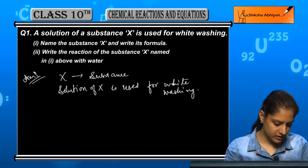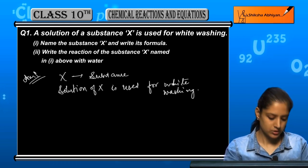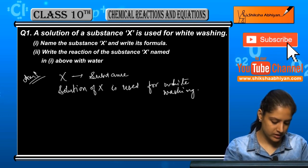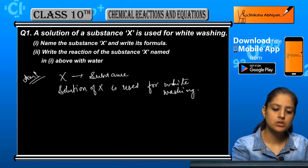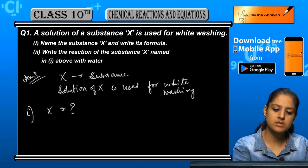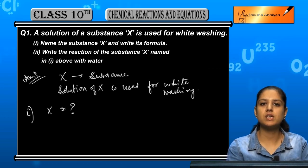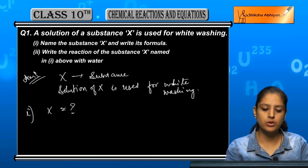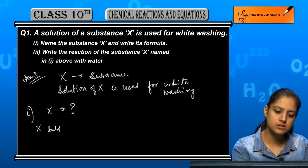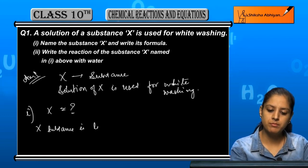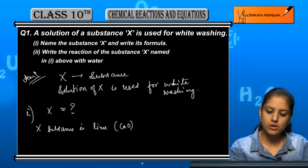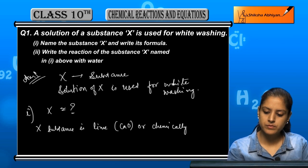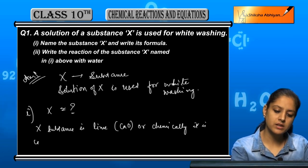You have to name the substance X, write its formula, and write the reaction of the substance with water. So you need to know which substance is used for white washing.